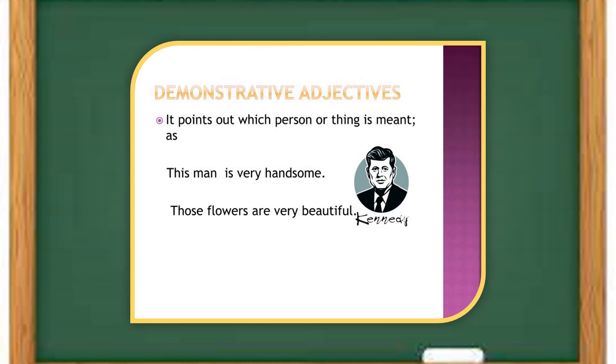Now let us know about demonstrative adjectives. Demonstrative adjectives are used to point out some person or things. Generally, this, those, the, such, certain, are some examples of demonstrative adjectives.